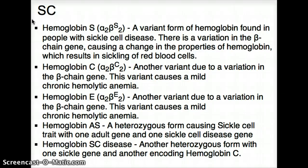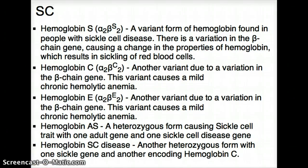Other variants are hemoglobin C, hemoglobin E, and hemoglobin SC. Hemoglobin C, like sickle cell disease, deals with the abnormal structure of hemoglobin. There is a variation on the beta chain of the hemoglobin, and this variation leads to mild chronic hemolytic anemia if it's homozygous. If it's heterozygous, then we have hemoglobin SC disease, which involves the beta chain but does not cause any sickling — it is the heterozygous form of hemoglobin C.